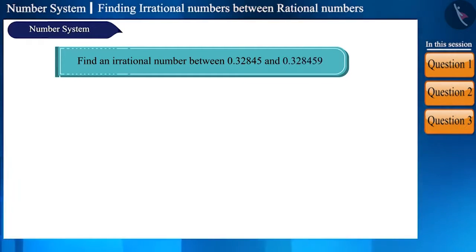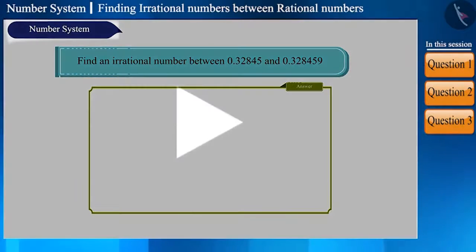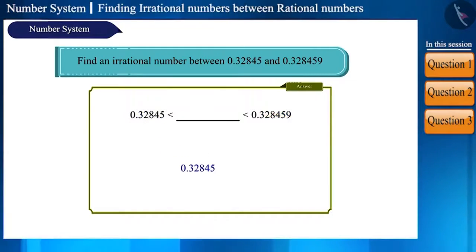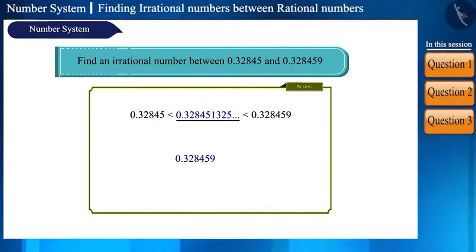And the last question of this session: find an irrational number between these two rational numbers. We can pause the video to attempt it. Here we have to note that both these numbers are the same up to 5 decimal places. So we have to keep the irrational number matching up to 5 decimal places — that is, 0.32845. Since the next number has 9 after the 5 common digits, we can write any digit from 0 to 8, then add non-terminating and non-repeating digits. If we had written 9, the number would have been greater than the upper bound and would not lie between the two given numbers.